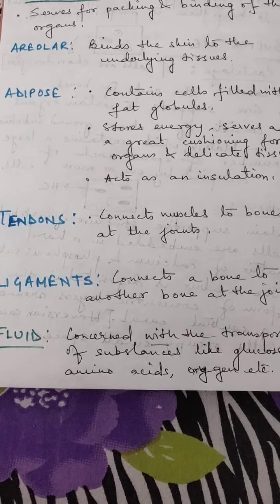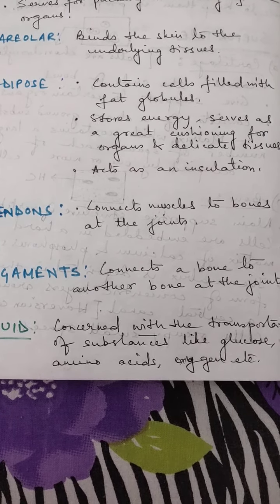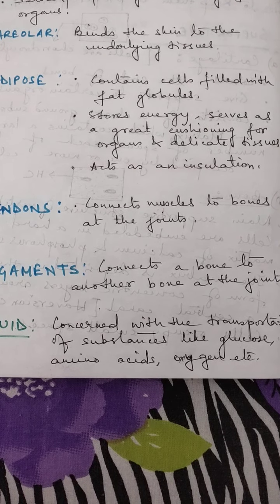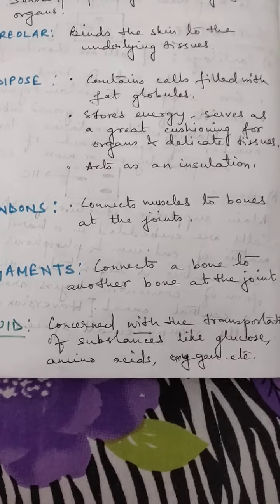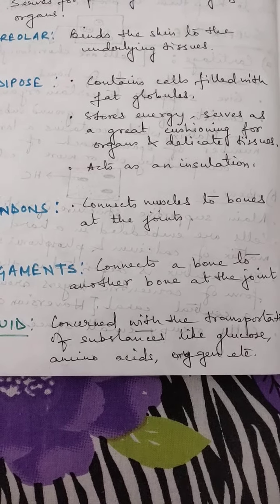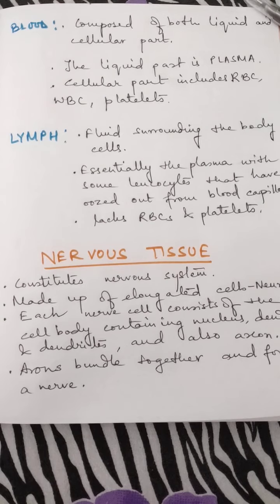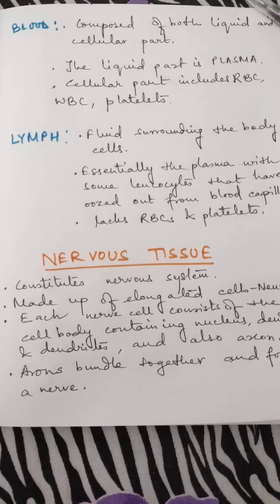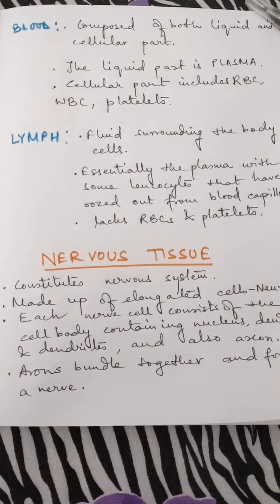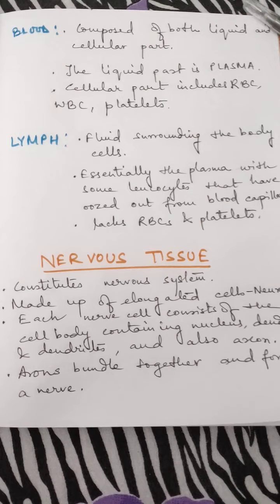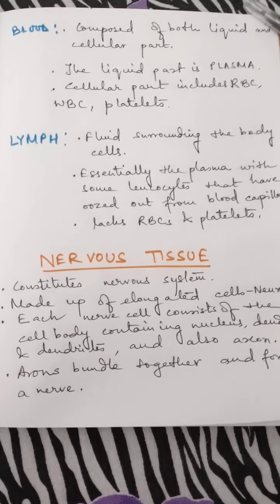Next is fluid. Fluid means something which is liquid, and it is concerned with the transportation of substances like glucose, amino acids, oxygen, etc. It has got two types: blood and lymph. Blood is composed of both a liquid and cellular part. The liquid part is named plasma, and the cellular part includes red blood corpuscles, white blood corpuscles, and platelets — in short, RBC, WBC, and platelets.